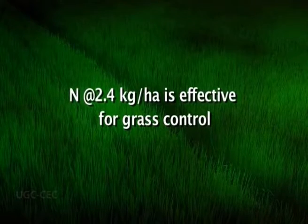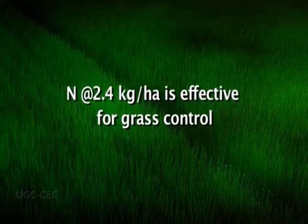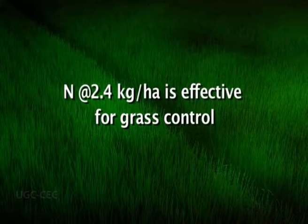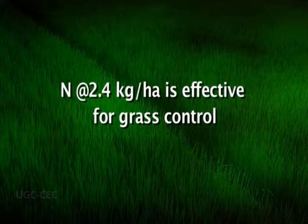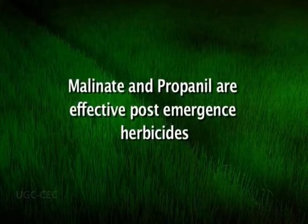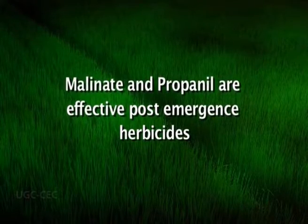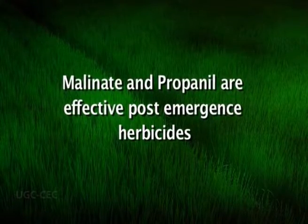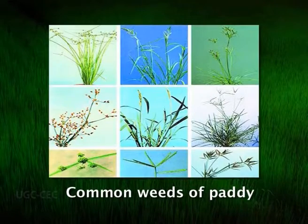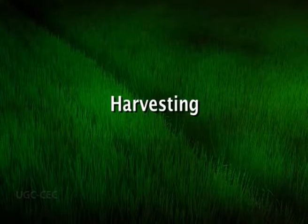Different herbicides are also used for the eradication of weeds. For example, nitrogen at the rate of 2.4 kilograms per hectare is used for controlling a variety of grasses. Molinate and propanil are effective post-emergence herbicides. 2,4-D, MCPA, 2,4,5-T and silvex are used in rice for controlling broad-leafed weeds and nutsedge.